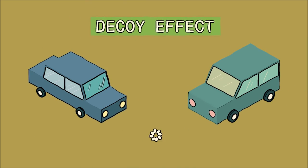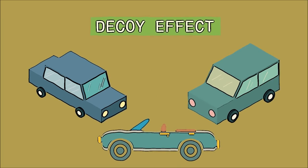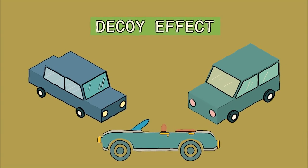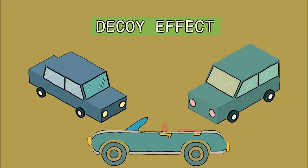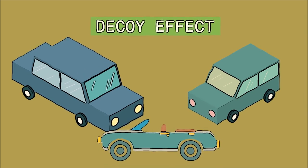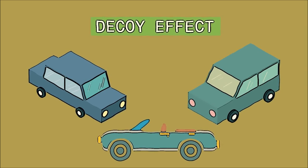You see, when trying to decide between two choices, the presentation of a third option — which is clearly inferior to one of the first two choices — makes the clearly superior option seem much more desirable, even though the first two options each had their own pros and cons. In this case, the $50,000 car was a decoy used to make the $40,000 car seem like it was the best option, even though the $50,000 car was never even in consideration to begin with.